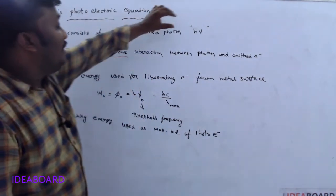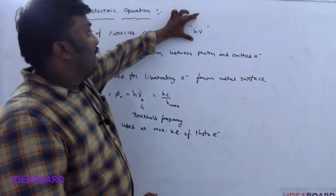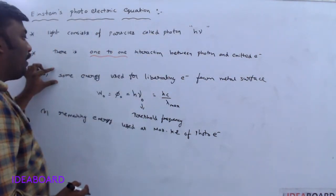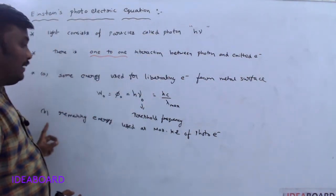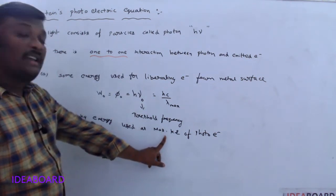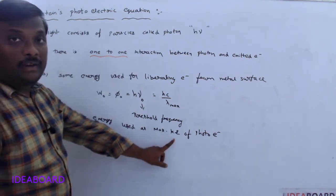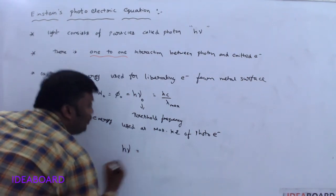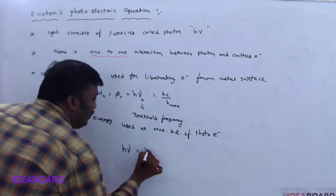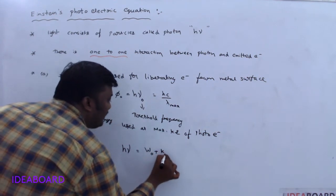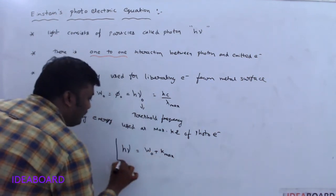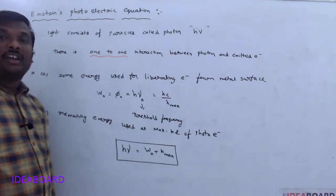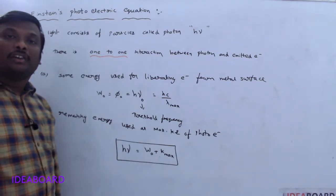The energy of the photon is utilized — some part as work function, and the remaining energy is used as maximum kinetic energy. Therefore, h·ν = w₀ + K_max. This is called Einstein's photoelectric equation.